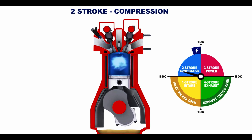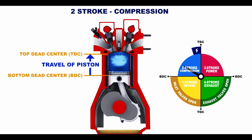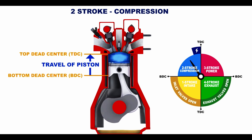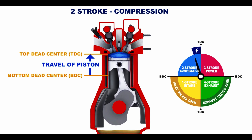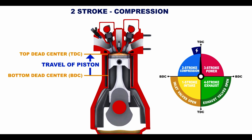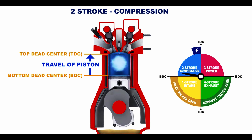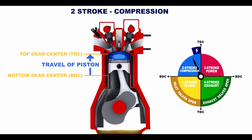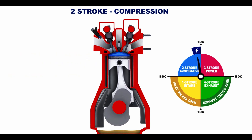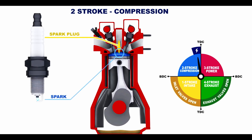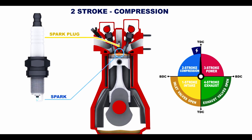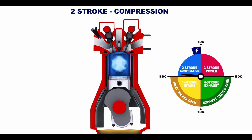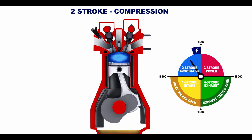The second stroke is compression. This stroke starts at bottom dead center and ends at top dead center. All valves are closed. The cylinder volume is reduced, causing the fuel-air mixture to compress. The compression raises the cylinder's temperature and pressure. As the piston approaches top dead center, the spark at the spark plug ignites the fuel-air mixture. The stroke is finished when the piston reaches top dead center.